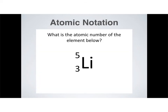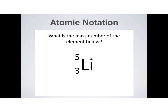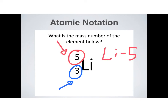Here are some example questions. What is the atomic number of the element below? Given atomic notation, which number gives the atomic number? It is the lower number — so the atomic number of lithium is 3. You could have also figured that out by looking at a periodic table. Which one is the mass number? Since 3 is the atomic number, the number 5 must be the mass number, telling us this is lithium-5 — that is the isotope we're seeing.